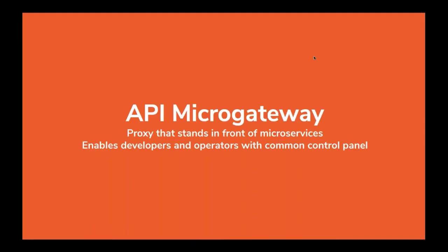First, let me explain what a micro gateway is. In simple terms, a micro gateway is a proxy that stands in front of your microservices. It provides values to developers like exposing governance, discovery, and observability functionalities in a common reusable component, and provides values to operators like enforcing security and policies through a centralized control panel.